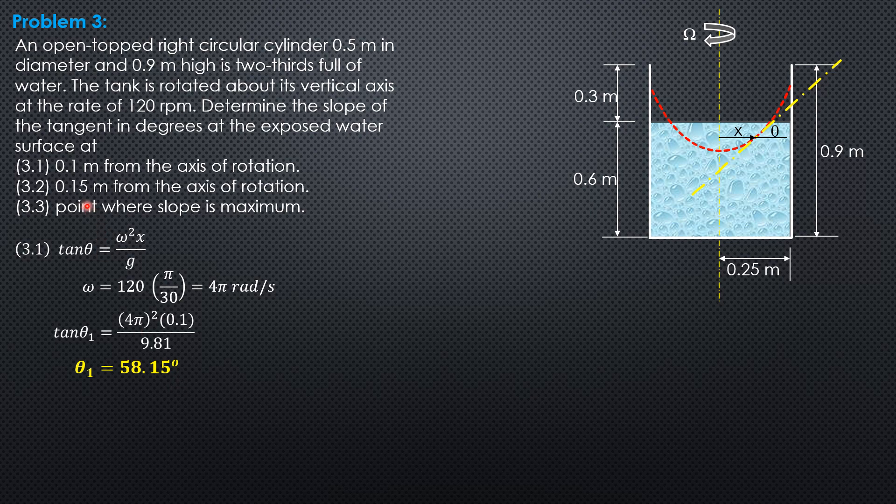For the second part, we use the same formula, tangent theta 2 equals quantity 4 pi times 0.15 over 9.81. And theta 2 equals 67.5 degrees.